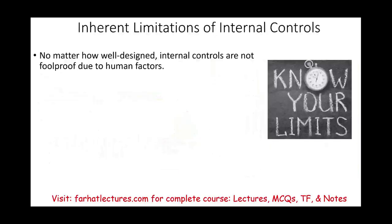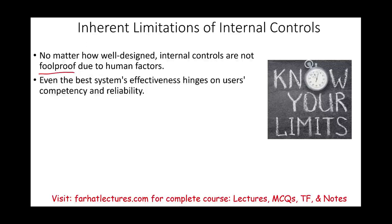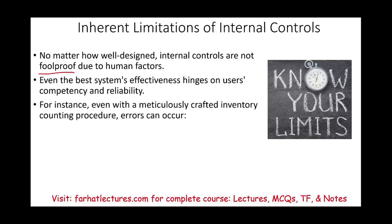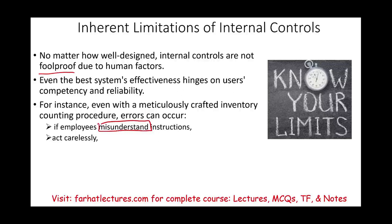No matter how well an internal control is designed, they are not foolproof. We have human errors — even the best system hinges on the competency and reliability of the users. You can have the best system, but if you don't use it properly, it's not effective. Even with the best internal control system for inventory, errors could still occur. For example, employees might misunderstand instructions, act carelessly due to tiredness or laziness, and as a result may not follow instructions properly.